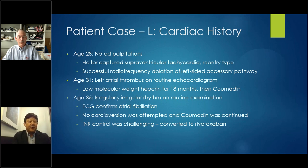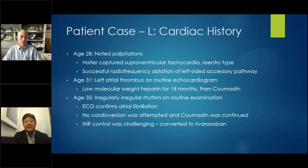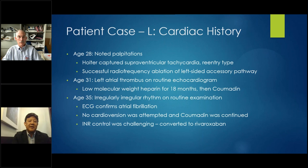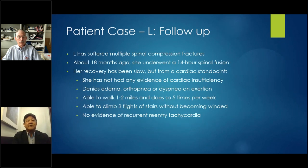At age 31, she was documented to have a left atrial thrombus on a routine echocardiogram. She was put on Lovenox for 18 months and then started on Coumadin. At age 35, she was noted to have an irregularly irregular rhythm on routine examination — that's atrial fibrillation until proven otherwise — confirmed by ECG. It was elected not to cardiovert her at that time. She was already on anticoagulation, so the Coumadin was continued. INR control was challenging and she was converted to rivaroxaban shortly thereafter. She has suffered multiple spinal compression fractures and about 18 months ago underwent a prolonged 14-hour spinal fusion surgery.